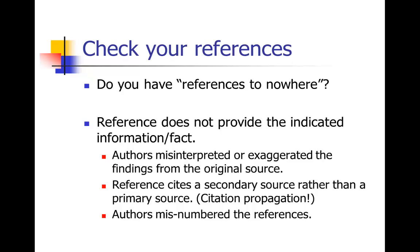The final thing to think about is your references. Make sure you pay attention to whether you have what I call references to nowhere. These are references where you go to the cited source trying to find the information the authors indicate is there, and in fact that information is not there. I do this often because I want to get information from the original source. More often than not, the reference does not in fact provide the indicated information. This is the rule, not the exception — so be aware, so you don't accidentally cite somebody's mistaken citation.